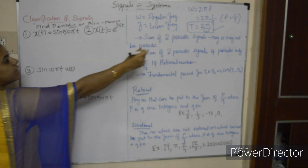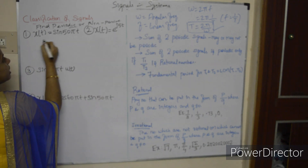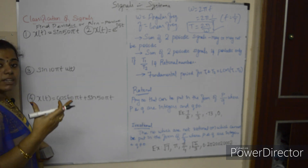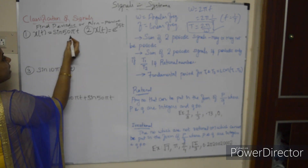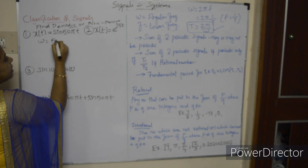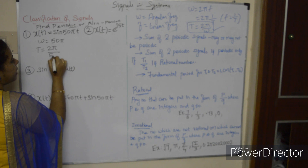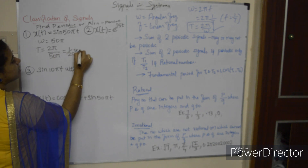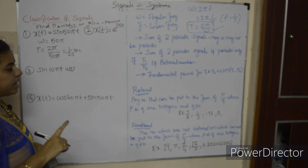Formula: T = 2π/ω. Comparing with the standard form sin(ωt), omega = 50π. So T = 2π/(50π) = 1/25 seconds. The fundamental time period is 1/25 second.